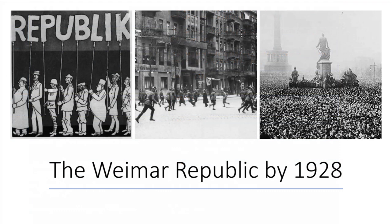That brings us to the end of this lesson on the Weimar Republic by 1928. The main thing you should have got from this lesson, as well as doing some good revision of the actual content on the Weimar Republic from 1918 to 1928, is this: if we look at the Weimar Republic in 1928 and we simply look at German society in that year, we cannot say that it was inevitable that the Weimar Republic was going to collapse, or that it was inevitable that there would be a rise of extremism, and that the political situation would deteriorate to the extent of a right-wing dictatorship in the form of Nazism. It's simply ahistorical to suggest that that is the case.